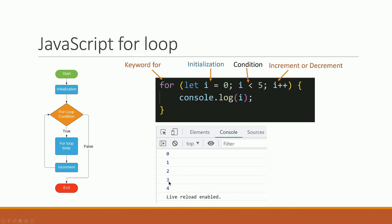Is three less than five? True — so console.log prints three. Three plus one is four. Then we check: is four less than five? True. Let's go on and print console.log — let's print four.